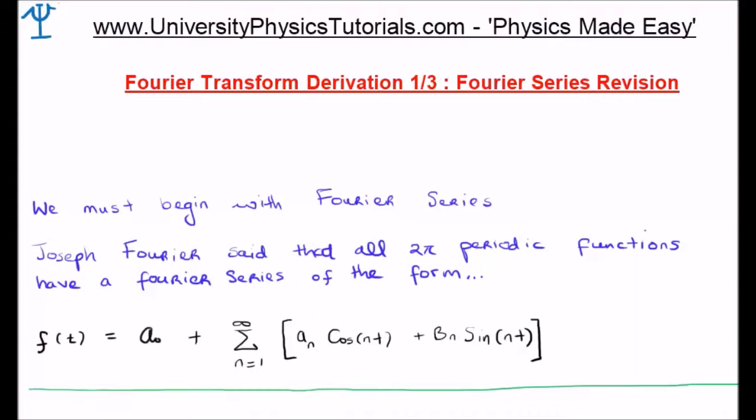So this is what Fourier proposed. He thereafter had to work out or derive the actual functional forms of b sub n, a sub n, and a sub 0. So let's quickly show how he did that.